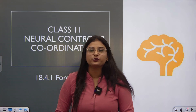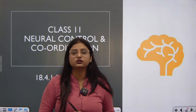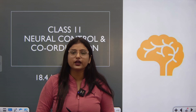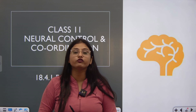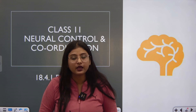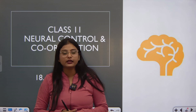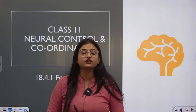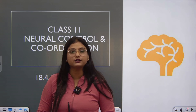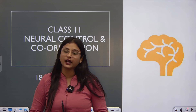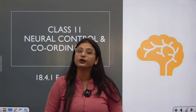Hi everyone, welcome back to my channel. We have been doing the neural system of control and coordination and we have finished a lot of the chapter. As per the rationalized NCERT, we are only left with forebrain, midbrain and hindbrain. In this video, I will cover the forebrain part. In the next video, we will cover combined midbrain and hindbrain.